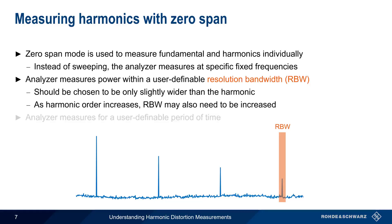The measurement time at each frequency is typically also user-definable, with longer measurement times producing more accurate measurement results. In many modern spectrum analyzers, all of these functions are integrated into an automated measurement routine, where the user simply provides a few configuration values, and the analyzer measures and reports the results automatically.